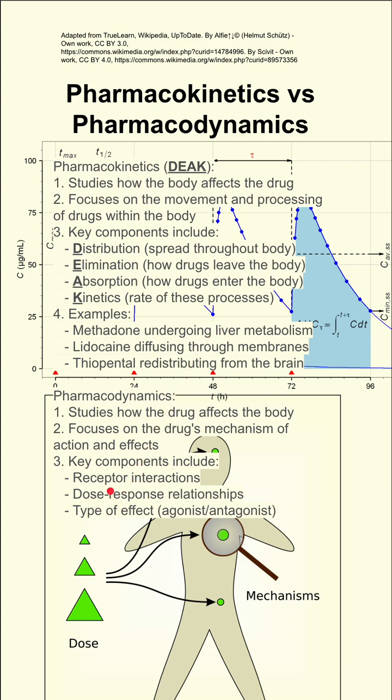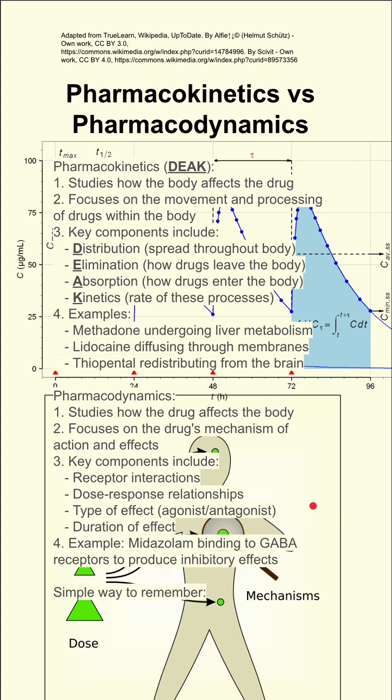Key components include receptor interactions, dose-response relationships, the type of effect that the drug has, like agonist versus antagonist, the duration of effect. An example is midazolam binding to the GABA receptors to produce inhibitory effects.